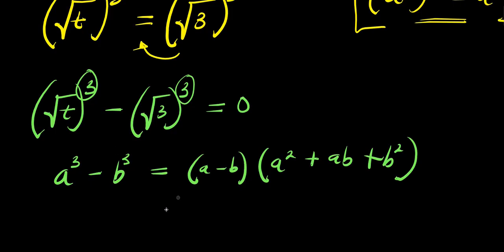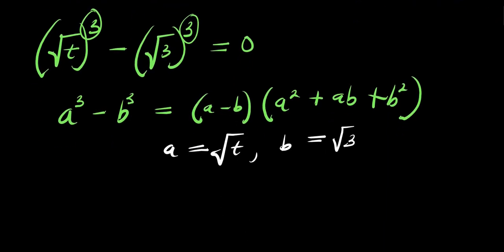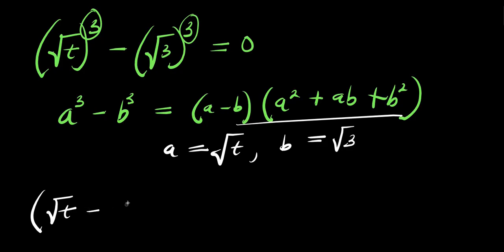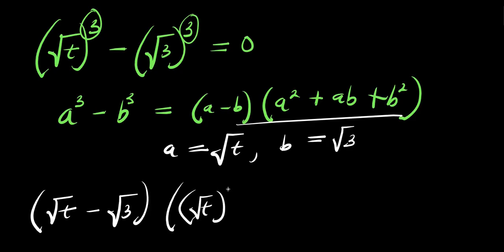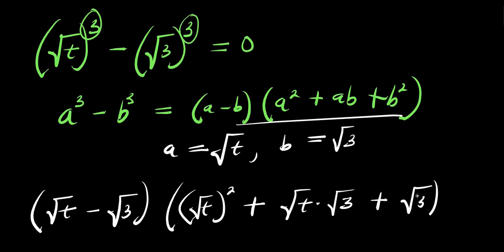In this particular case, our a equals root t and b equals root 3. So what we are going to do is apply this identity: we have a minus b, that is root t minus root 3, times a squared, that is root t to the power of 2, plus ab, which is root t times root 3, and this equals 0.